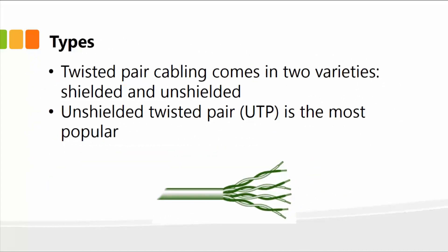The main two types of network cables are the twisted pair cabling, which comes in two varieties: shielded and unshielded twisted pair cable. The UTP, also known as the unshielded twisted pair, is the most popular and common. So every time you see a network cable connecting two computers, most likely it's a UTP cable.